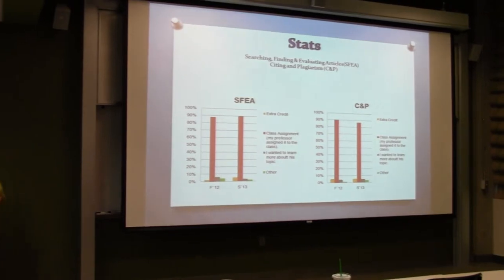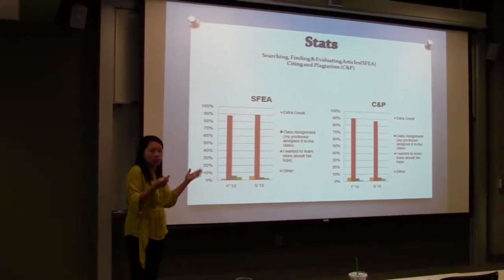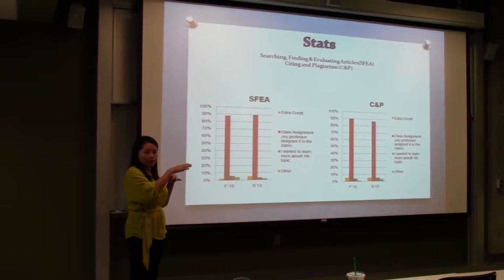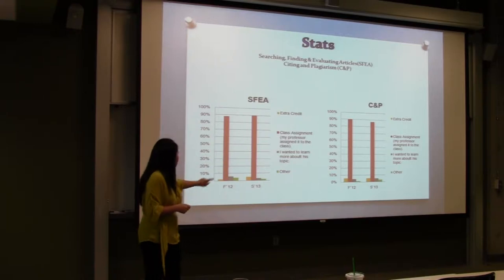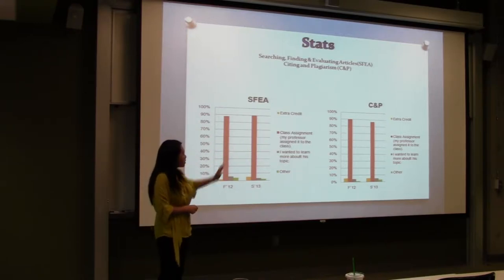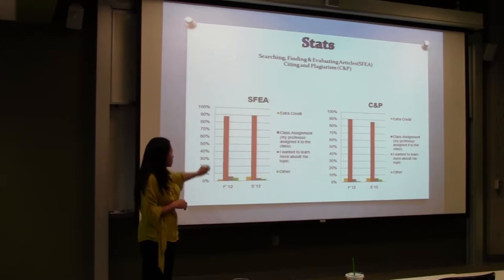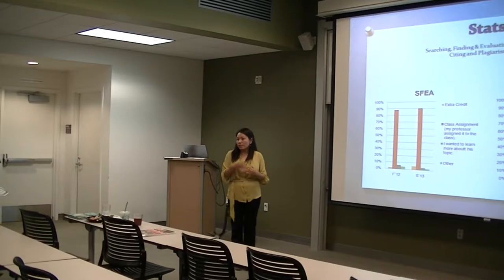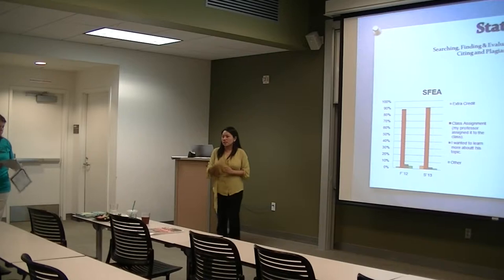These statistics show what faculty are using the modules for. Recall that some years had higher numbers because professors assigned them as required work. You can see with the articles and citing and plagiarism modules that professors assigning them as a class requirement produced far higher usage than when they were offered for extra credit only. We just started collecting detailed data on this assignment vs. extra credit distinction within the last year.